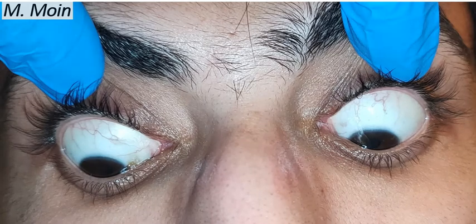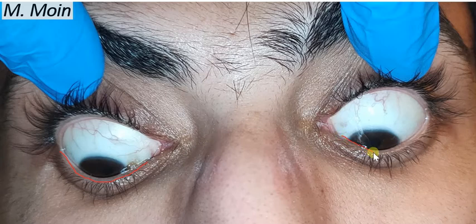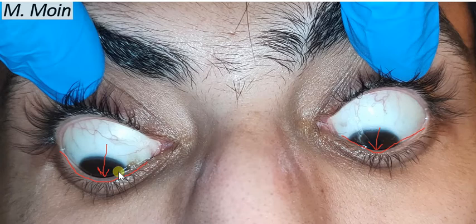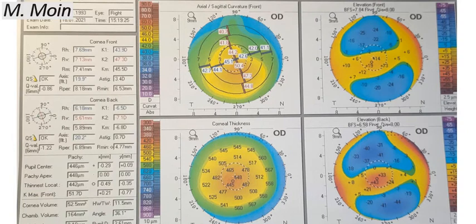On external examination, look for the Munson sign — the conical shape of the cornea. The cone appears more prominent on the right side compared to the left. When you ask the patient to look down, the cornea presses on the eyelid from behind, and the eyelid takes the conical shape of the corneal apex. This is called the Munson sign, which is positive in this patient. Now let's look at the corneal topography.